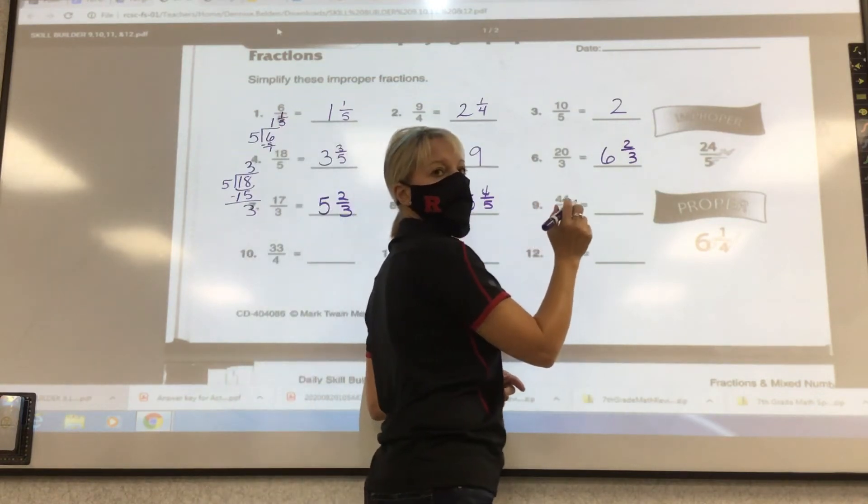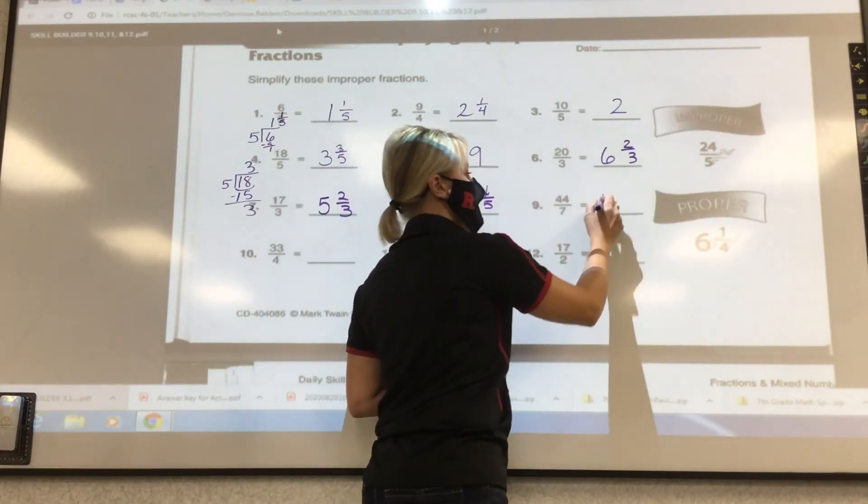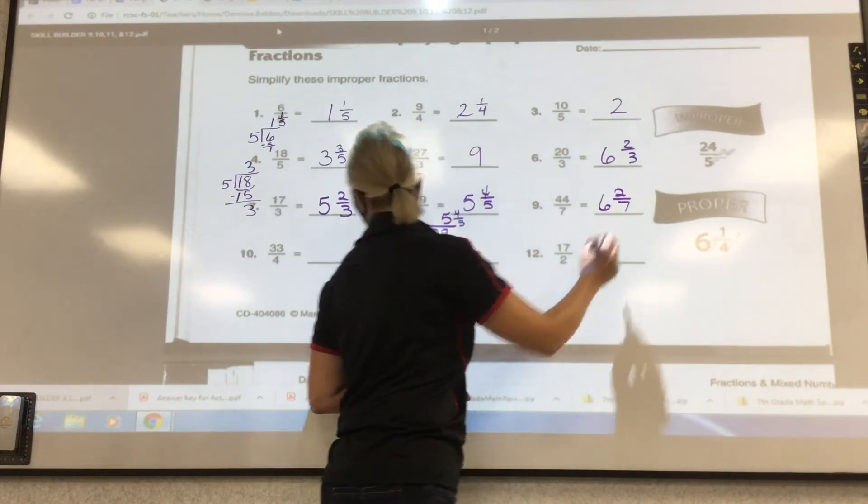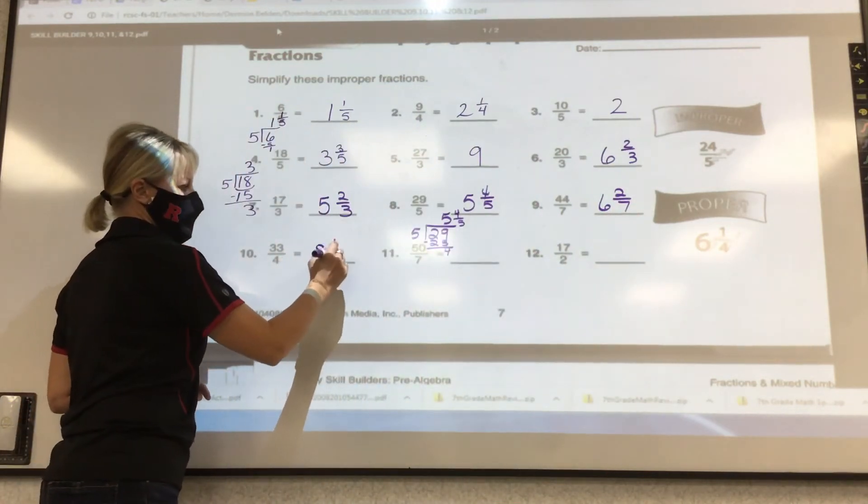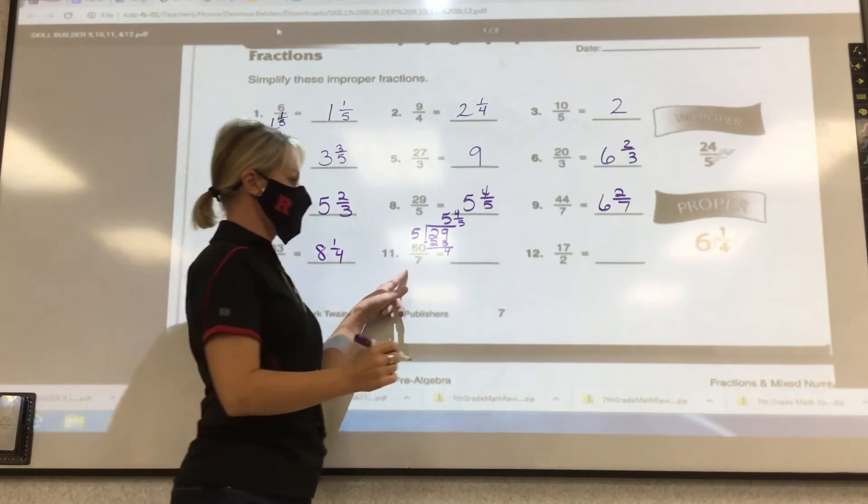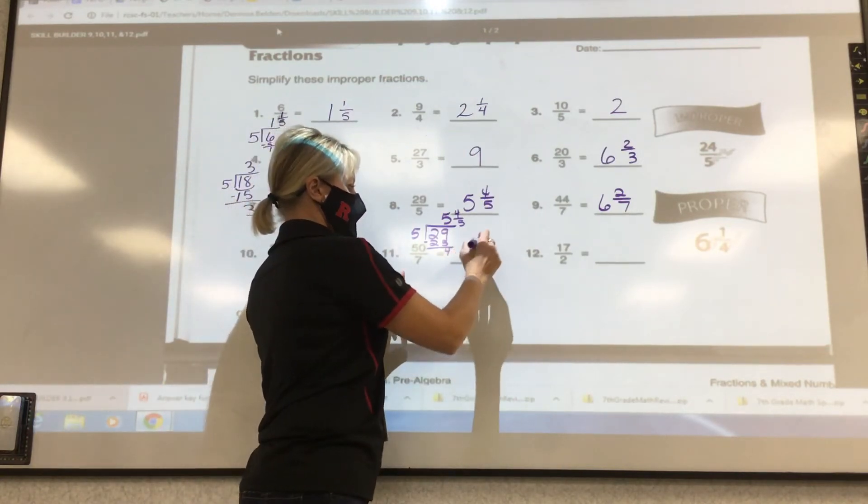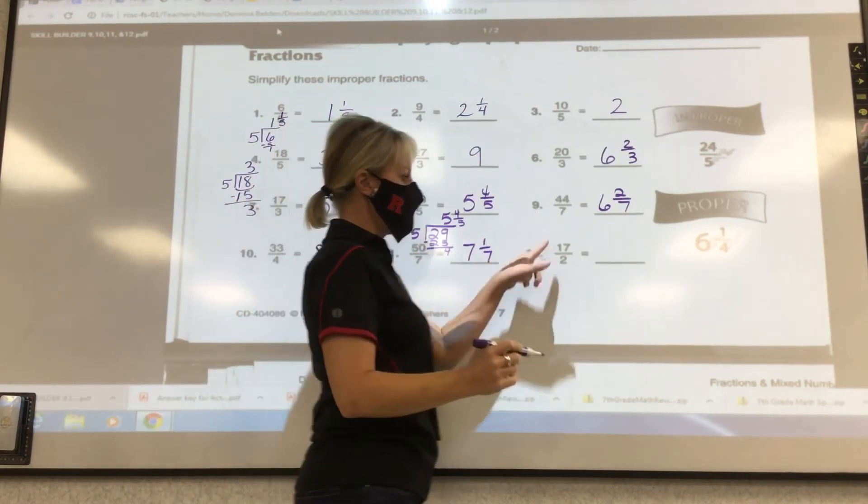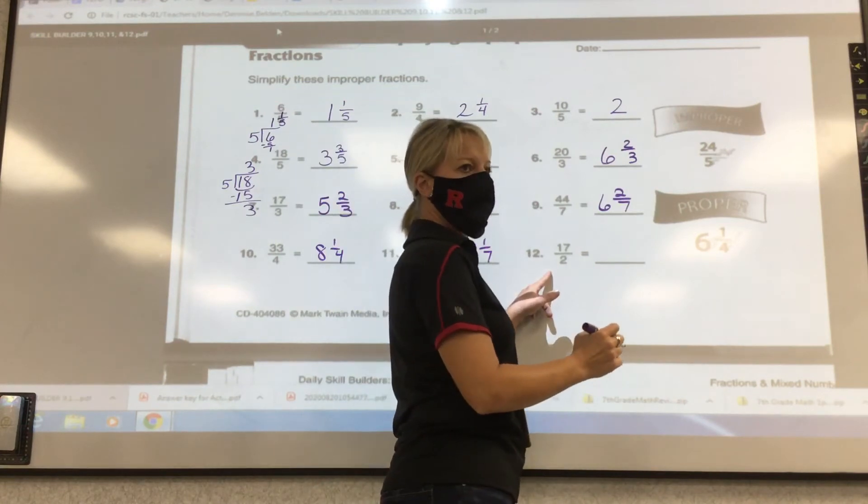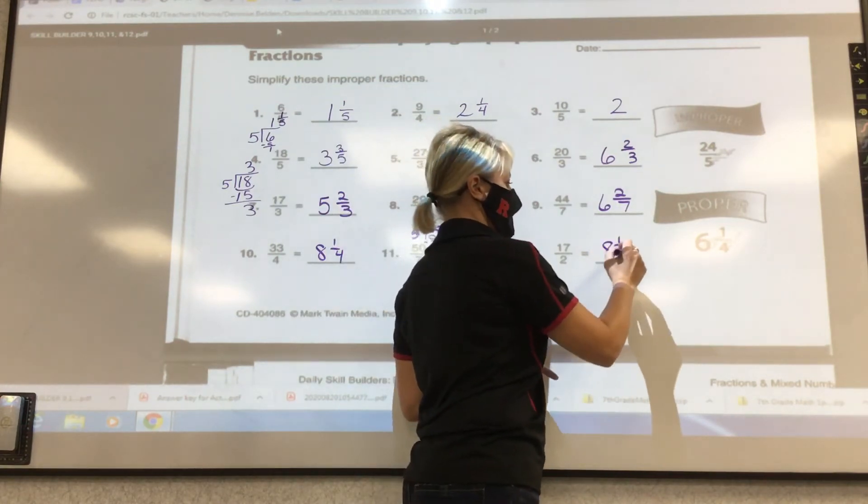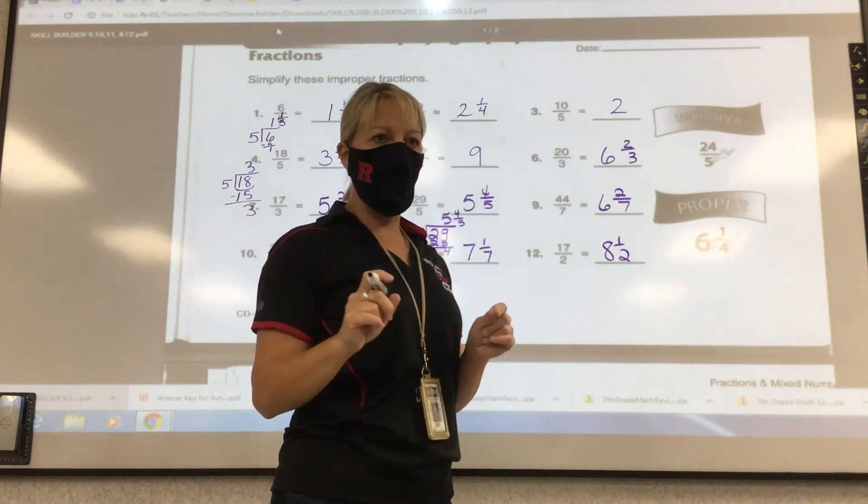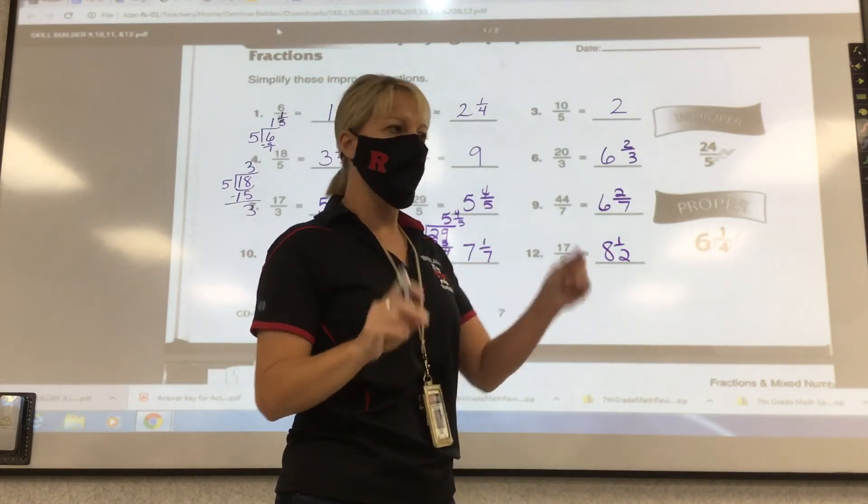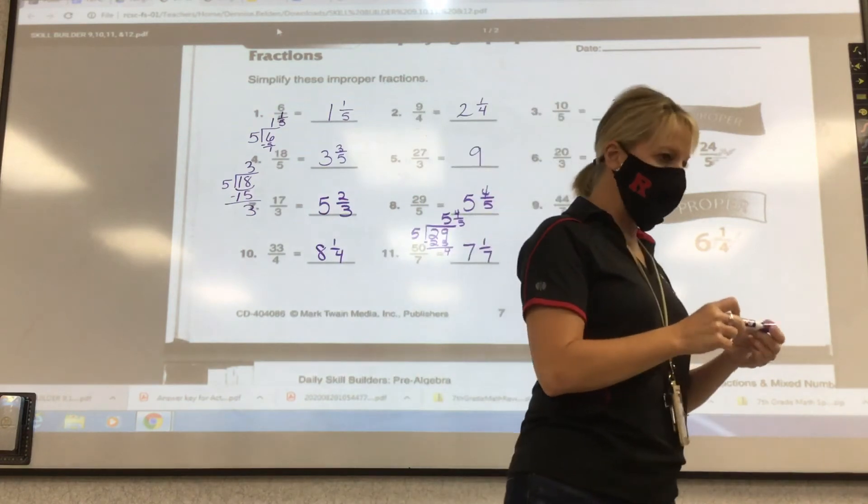44/7. 64/7. 33/4, 8 and 1/4. 50/7, 7 and 1/7. 17/2, 8 and 1/2. Take a picture of it. Submit it to the Canvas assignment under Bellwork. And then have your spiral review out ready to grade.